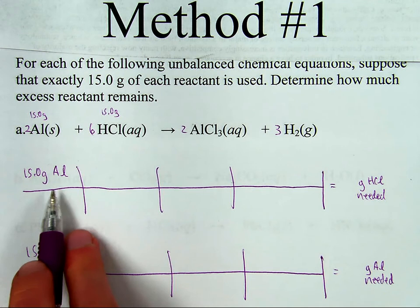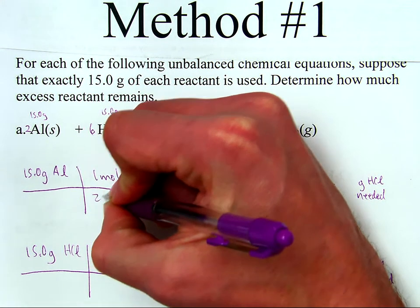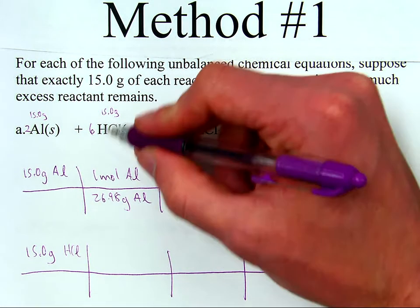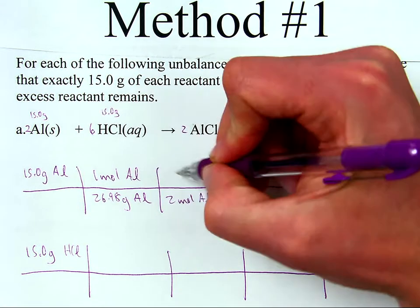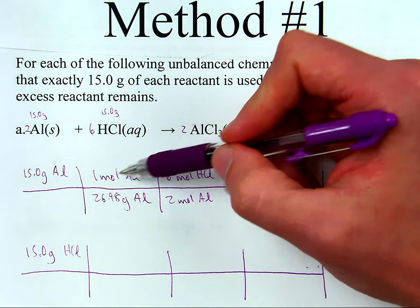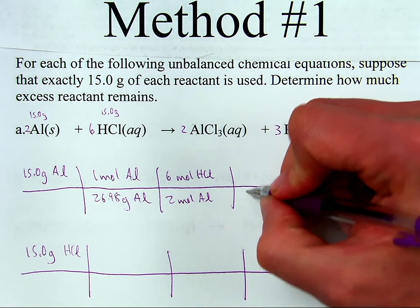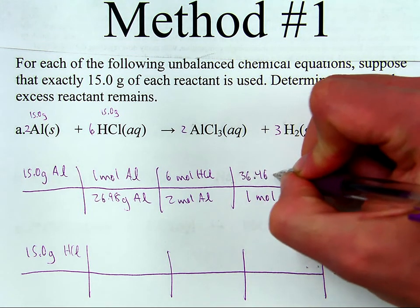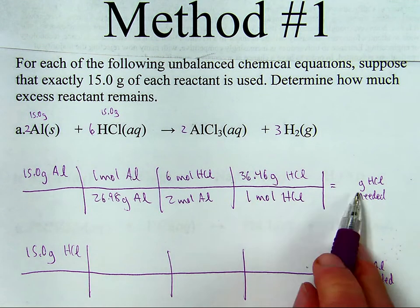With the balanced equation, first I'm going to calculate how many grams of HCl are needed for this mass of aluminum. One mole of aluminum has a mass of 26.98 grams of aluminum — grams cancel. From the equation, there's a coefficient of two next to aluminum, so that's two moles of aluminum, and six moles of HCl. Moles of aluminum cancel, and I use the molar mass of HCl where one mole of HCl has a mass of 36.46 grams — giving grams of HCl in the final answer.